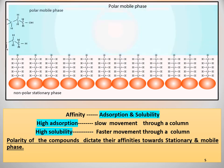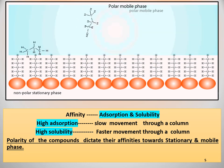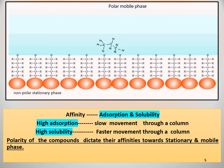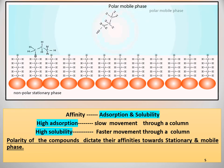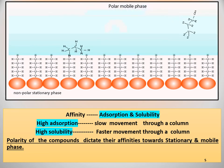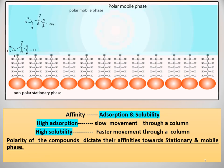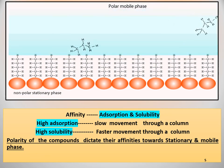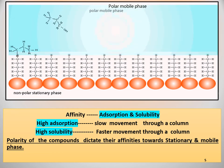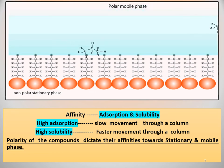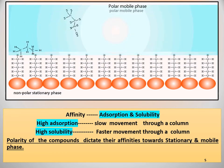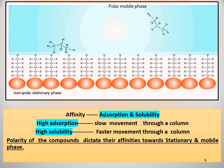It's the polarity of the compounds that dictates their affinities towards stationary and mobile phase. If the stationary phase is polar and the components present in the mixture are both polar and nonpolar, then initially nonpolar molecules will be eluted first, because polar molecules will be adsorbed strongly on the stationary phase. Later we will elute the polar molecules from the stationary phase. So this is the principle of chromatography.